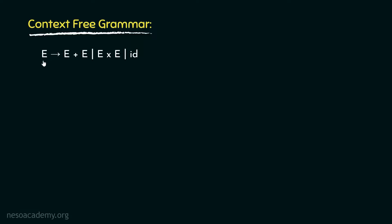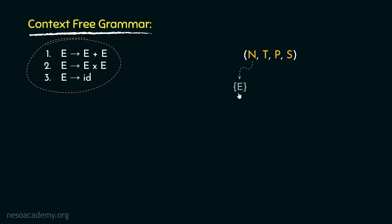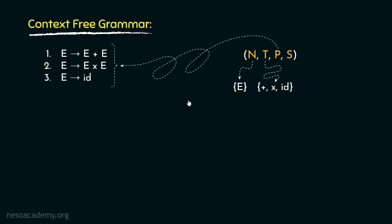Consider this grammar: E can be rewritten as E plus E, or E into E, or ID (identifier). Although it's written in this fashion, there are three rules. The first one: E can be rewritten as E plus E. The second: E can be rewritten as E into E. And the third: E can be rewritten as ID. Now we already know that a grammar is defined by four tuples: N, T, P, and S — where N is the set of non-terminals, T is the set of terminal symbols, P is the set of production rules, and S is the start symbol, which happens to be a non-terminal. For this particular grammar, N contains only E, T contains the addition operator, the multiplication operator and ID, P specifies all three rules, and the start symbol is E itself.